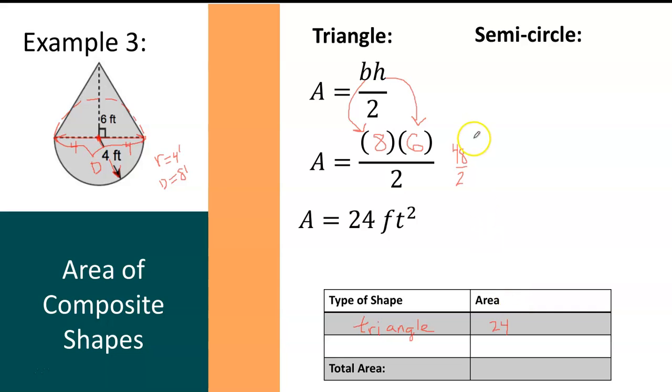Next, we're going to find the area of the half circle, the semicircle. To find the area of a semicircle, you take the area of the entire circle and you divide it by 2, because you only need half of the area of the circle.